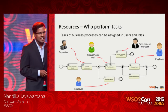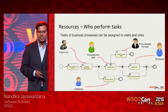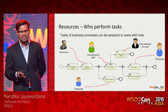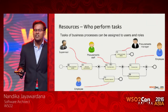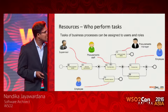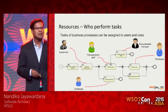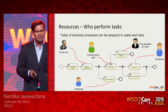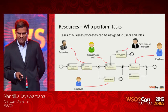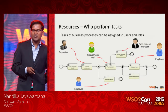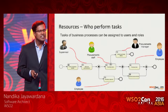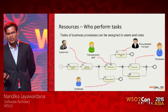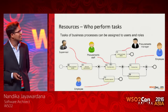In a business process you can assign specific tasks to users and roles. In this BPMN model of a material procurement process, for example, you have a supervisor looking at the approval of the request, a procurement staff member given a task, an employee, a procurement manager, and so forth.